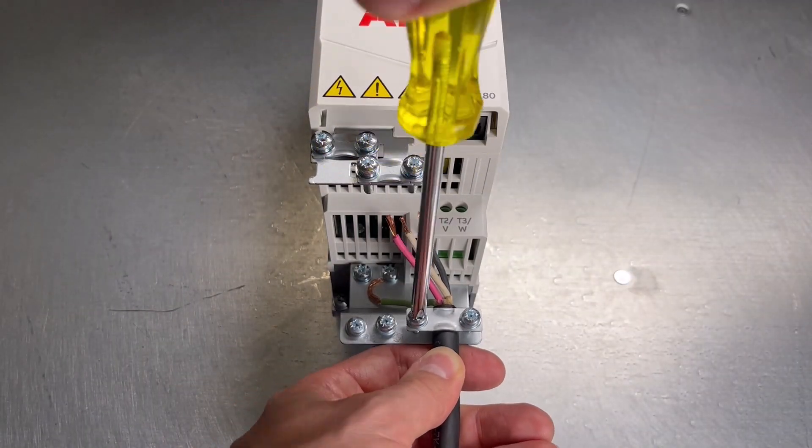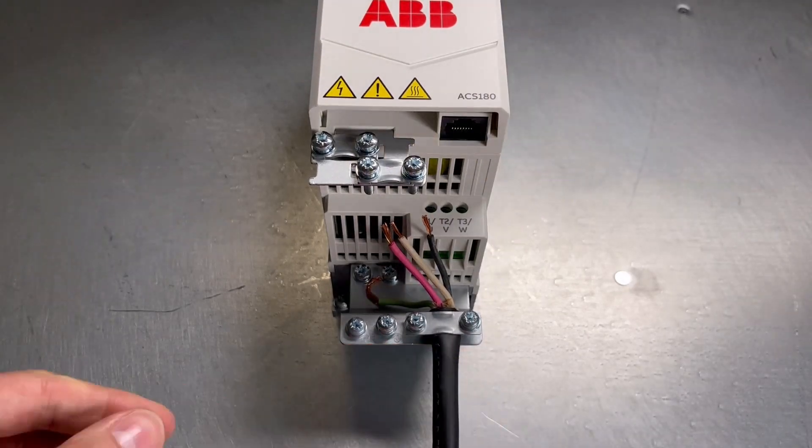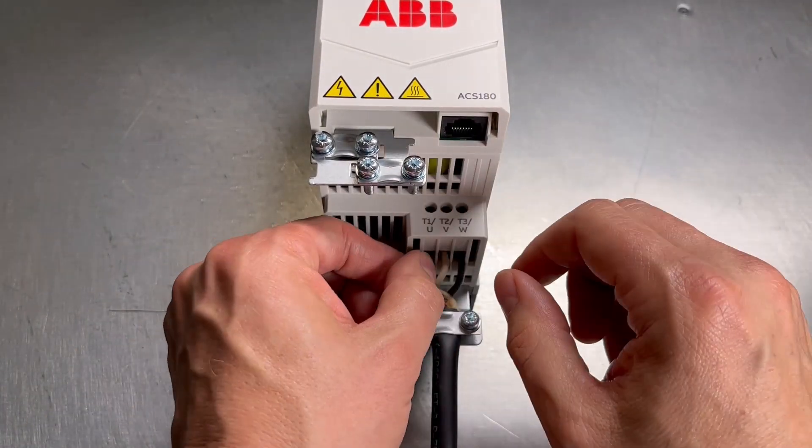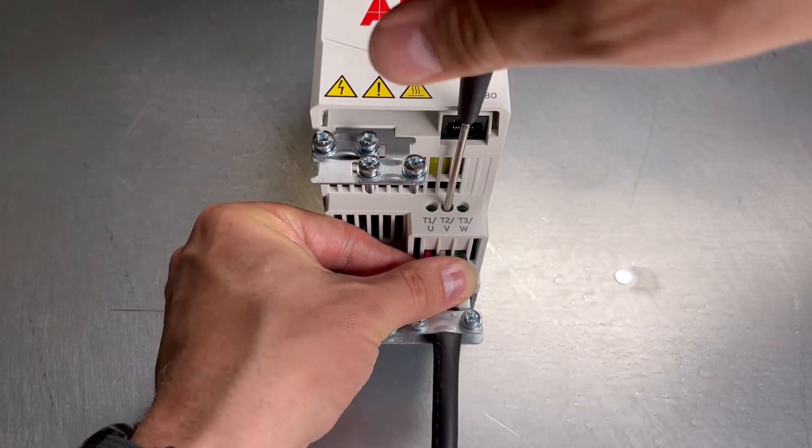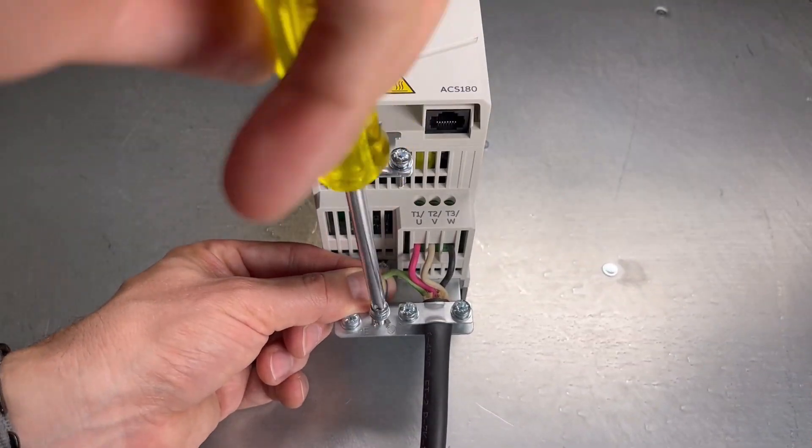Connect the phase conductors of the motor cable to the T1, T2, T3 slash UVW motor terminals. Torque the terminals to 0.8 Nm.